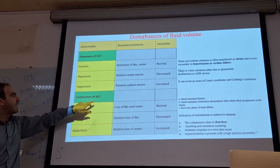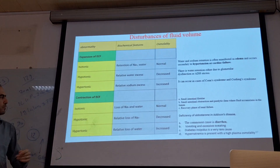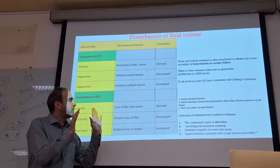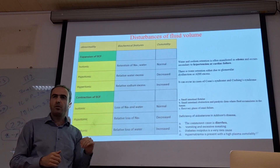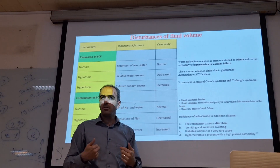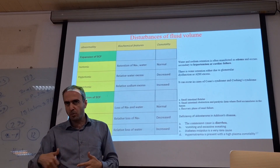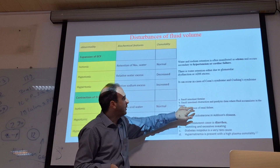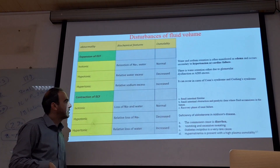Otherwise, we have contraction of ECF — ECF decreased. Again we have three types. Isotonic: we lose sodium and water together. Osmolality is normal. It can be due to small intestinal fistula — some patients have a fistula from the intestine and they lose water and sodium together — and also small intestinal obstruction or a paralytic situation.